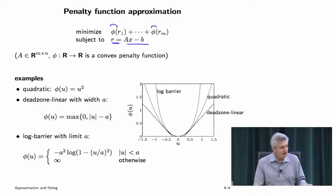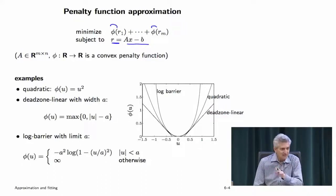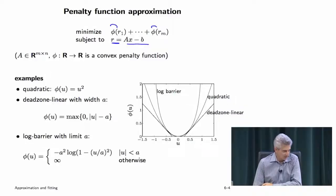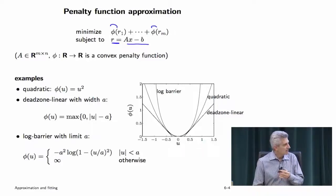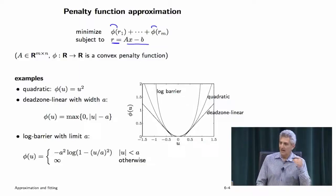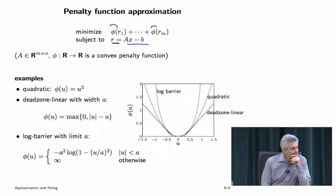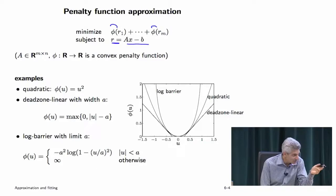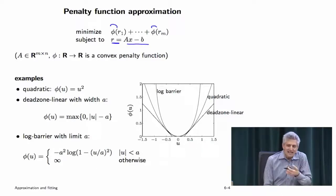You choose phi to shape how irritated you are with a residual of a certain size. If you take phi as the square function, that's least squares — implicitly saying that if a residual is small, you're barely irritated. But if a residual is big, you're very irritated. And the 'very' is not casual. That's the idea behind least squares: a small residual, you're fine; a big residual, not cool.